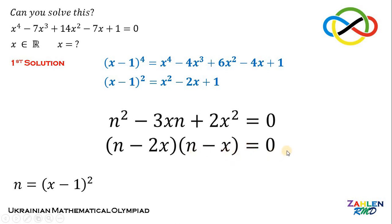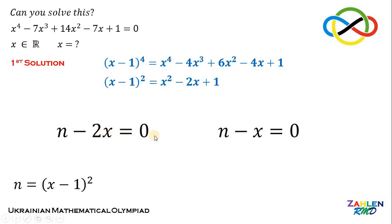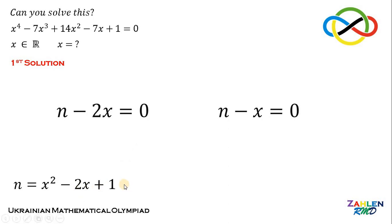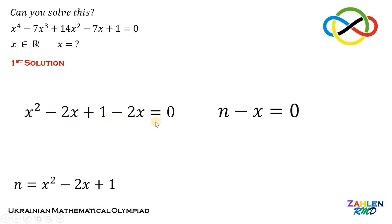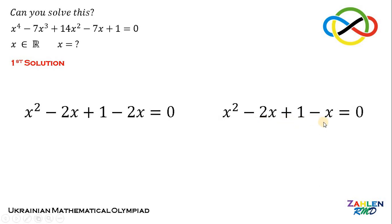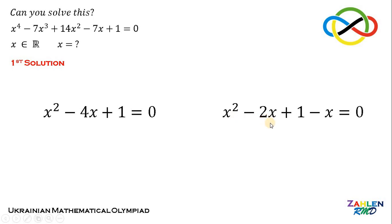Since the expression equals 0, at least one factor must equal 0, so n minus 2x equals 0 or n minus x equals 0. Replacing n with x squared minus 2x plus 1, the first equation becomes x squared minus 2x plus 1 minus 2x equals 0, simplifying to x squared minus 4x plus 1 equals 0. The second equation becomes x squared minus 2x plus 1 minus x equals 0, simplifying to x squared minus 3x plus 1 equals 0.